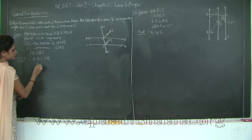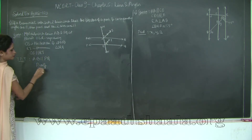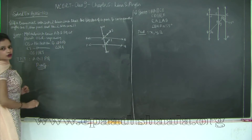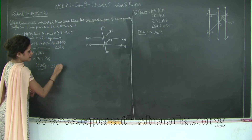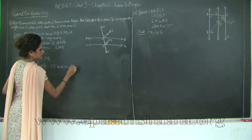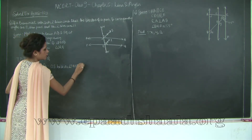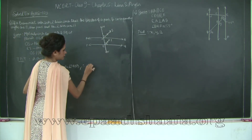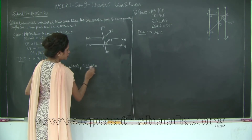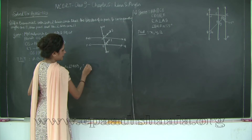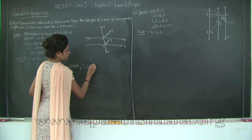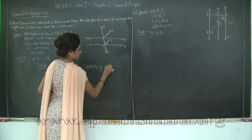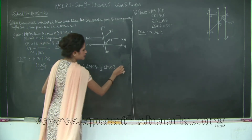Now let's do our proof. OS bisects angle MOB. Therefore, angle MOS is equal to angle SOB, or angle MOS is equal to half of angle MOB. I will mark this as statement 1.